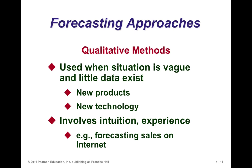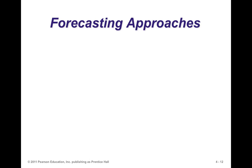Approaches to forecasting include both qualitative and quantitative methods. Qualitative methods tend to be used when you don't have a lot of hard data — for example, when a product is newly introduced and you don't have much historical information. They are used when the situation is vague, little data exists, such as with new products or new technology, and they involve intuition and experience. An example is forecasting sales on the internet without a lot of history.